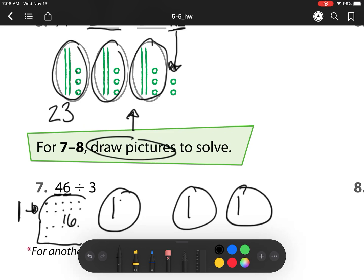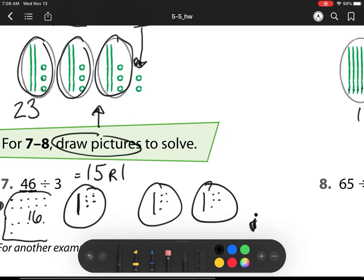So I'm going to go 1, 2, 3, 4, 5, 6, 7, 8, 9, 10, 11, 12, 13, 14, 15, with 1 left over for 16. So what do I have? Well, I have 1 ten, and then 1, 2, 3, 4, 5 ones, with a remainder of 1 right here. So my answer is 15 remainder 1.